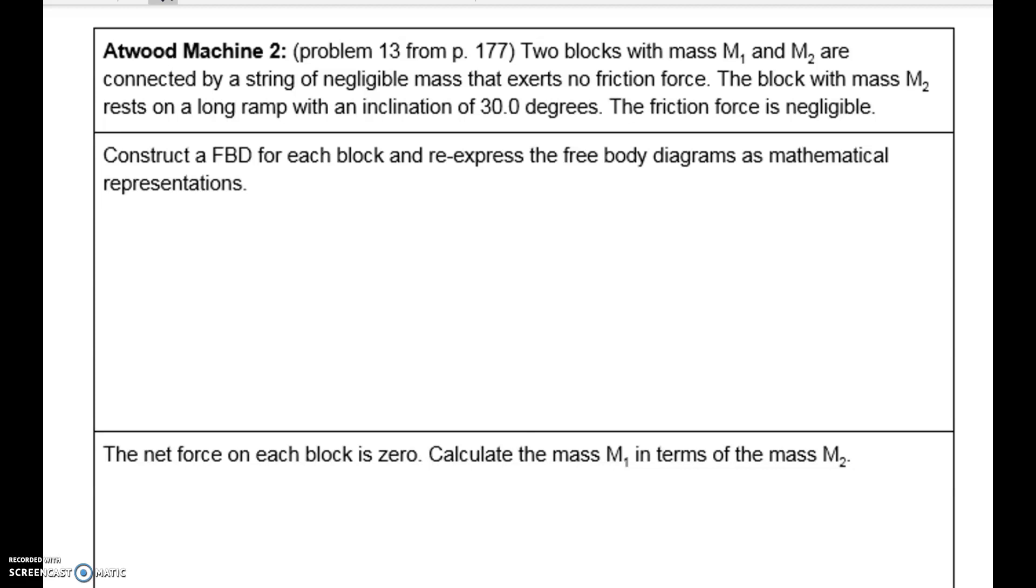All right, so let's look at another Atwood machine problem. This is kind of a classic. So we have two blocks with mass m1 and m2, and they're connected by a string of negligible mass that exerts no friction force. The block with mass m2 rests on a long ramp with an incline of 30 degrees. The friction force is negligible.